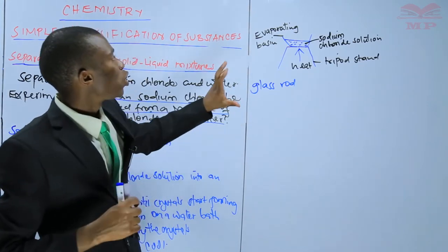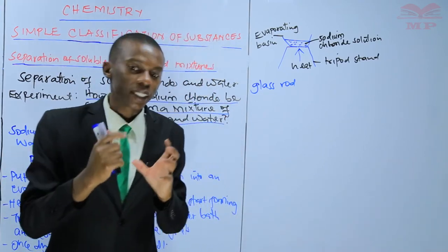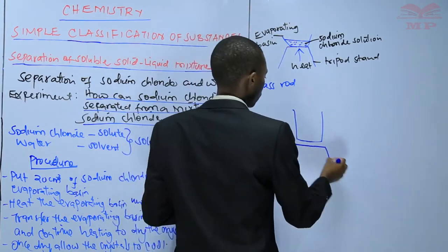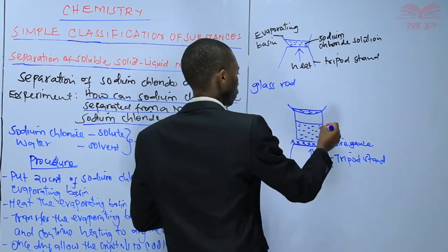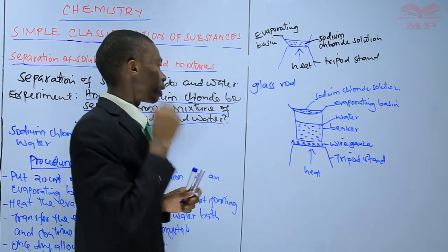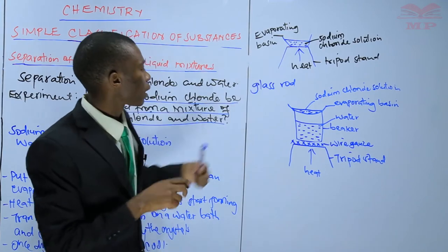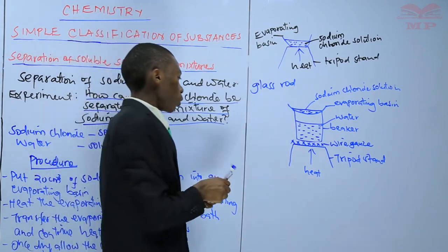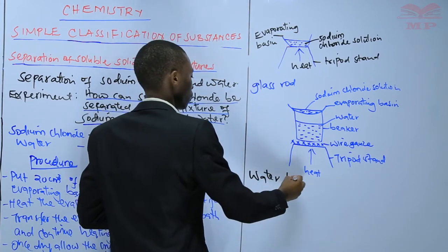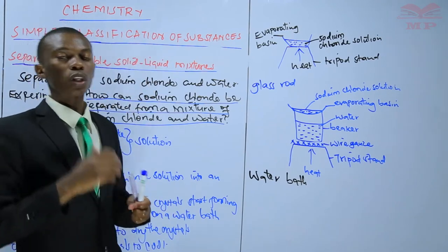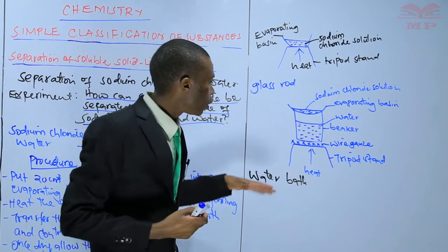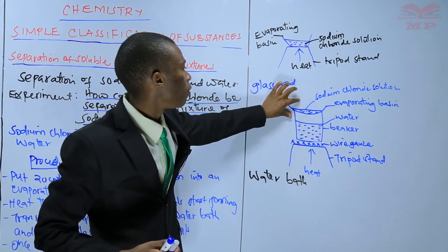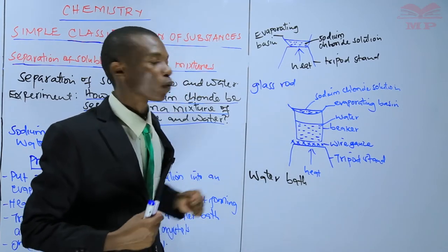What you do is remove the evaporating basin from direct heating and put it on a water bath. A water bath is just water which is being heated. When you heat this water, the heat in the water is now going to evaporate the water from the sodium chloride solution slowly.